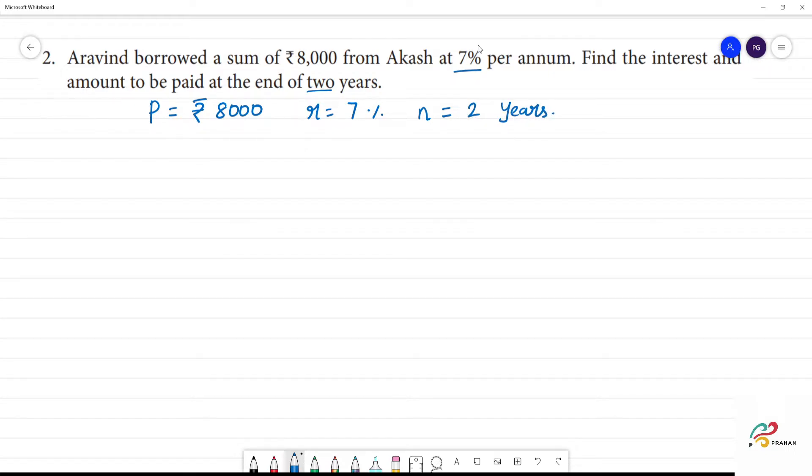Now, what do we get for the interest? The formula is I is equal to PNR divided by 100. Now for the amount, amount is equal to principal plus interest.